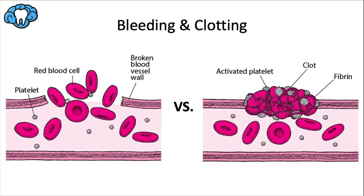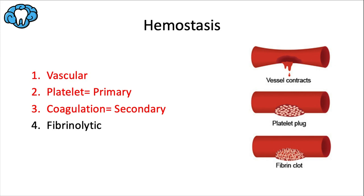In this context, patients will fall somewhere on a spectrum between bleeding and clotting. If they're on blood thinners, they're going to tend toward bleeding. If they're older, had a major surgery or hospitalization, are sedentary or immobile, they're going to tend toward clotting. Keep this spectrum in mind throughout this video.